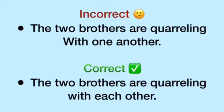Next: 'The two brothers are quarreling with one and other.' Incorrect. The correct sentence is: 'The two brothers are quarreling with each other.'